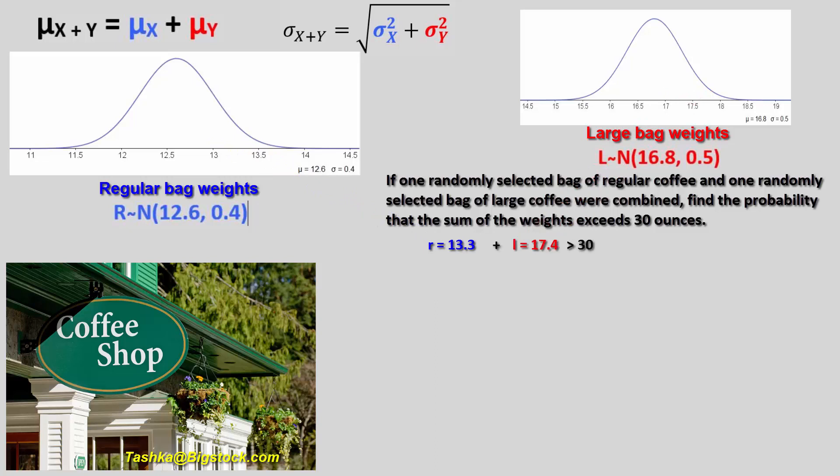We cannot solve this by trying to dream up all combinations of weights from each distribution separately. Instead, we need to find the joint probability distribution. We merely calculate the joint distribution, shape, center, and spread, by realizing that since both random variables were normal, then the sum of the weights will also have a normal distribution. That's our shape.